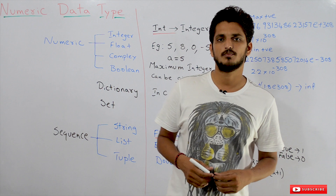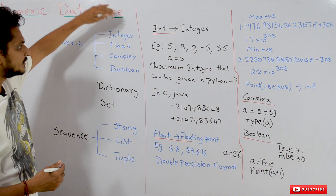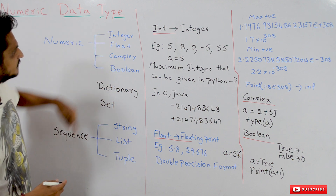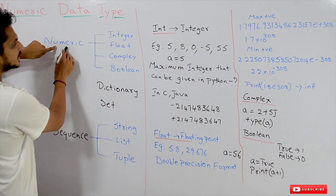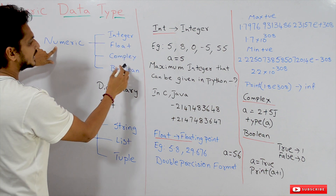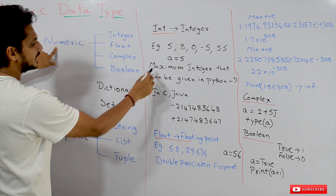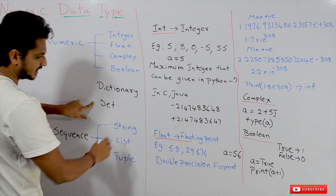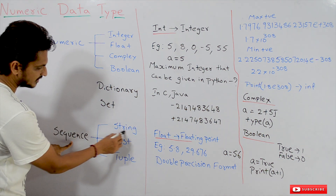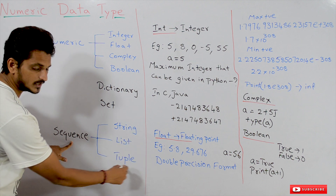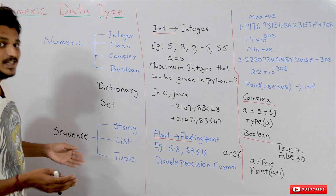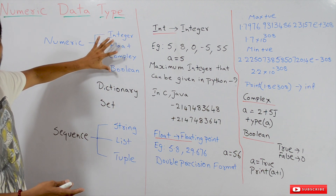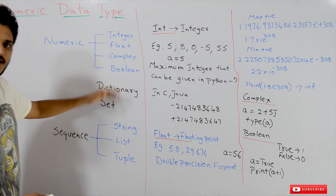Coming to today's topic, the list of data types available in Python: in numeric we have integer data type, float data type, complex data type, and boolean data type. We also have a separate dictionary data type, set data type, and in sequence we have string data type, list data type, and tuple data type. In this class we will discuss about the numeric data types, and in our next classes we will discuss about the remaining data types.